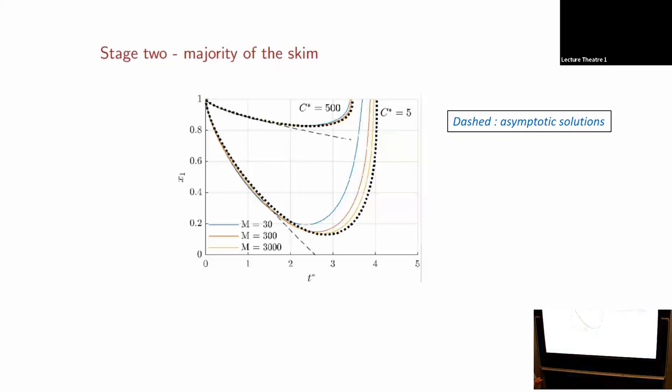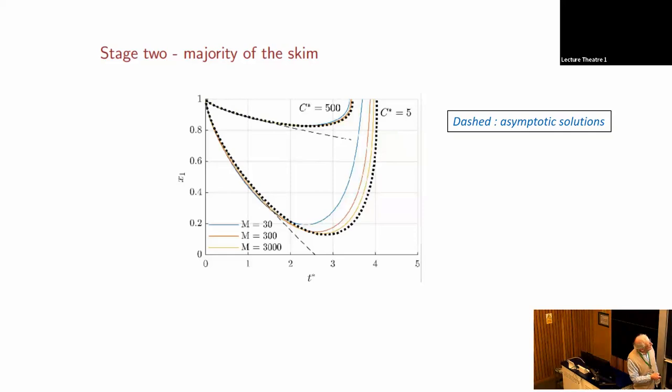Here's a comparison between the full solutions and this asymptotic theory for large mass and curvature or thickness. The blue, red, and yellow curves are from the full system, gradually increasing M: 30, 300, 3000. The asymptotic large value is the dashed curve. For C star is five, similar process for C star is 500. The results tend towards the asymptote but do it slowly. Even at 3000, you've still got a way to go to hit the asymptote, but the trend is clear from M is 30 and even less.